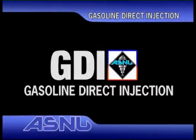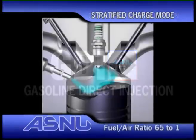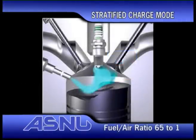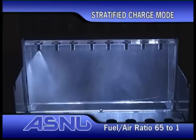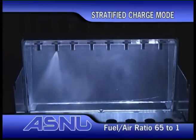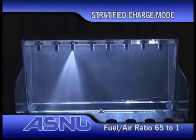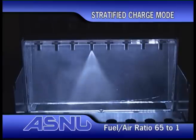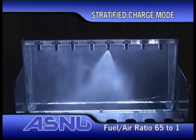The GDI system has two running modes: stratified and homogenous. Stratified charge mode is the economical combustion cycle. In some systems, the air-to-fuel ratio can be as high as 65 to 1. In this mode, the injector delivers a minimum amount of fuel into the combustion chamber, just before the piston reaches the top and before the plug fires. This mode is used at idle and light throttle settings when the car is driven slowly in some systems.